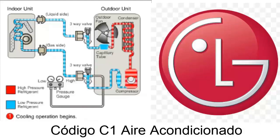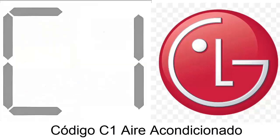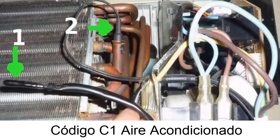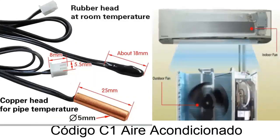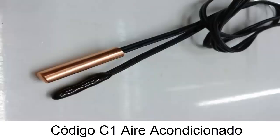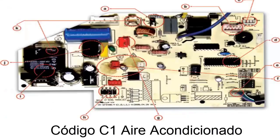C1 error in LG air conditioners: For LG air conditioners, the C1 error indicates a problem with the temperature sensor of the indoor unit, which is intended to measure the temperature of the evaporator to prevent it from freezing. Possible causes: 1. Defective or damaged sensor. 2. Loose or damaged connections in the sensor. 3. Failure in the control unit that supplies voltage to the sensor and receives its signal.